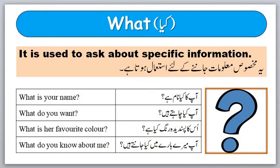Our next word is 'what,' जिसके मीनिंग है क्या. It is used to ask about specific information. मखसूस मालूमात के बारे में पूछने के लिए हम question के शुरू में word 'what' इस्तेमाल करते हैं. For example: What is your name? आपका क्या नाम है? What do you want? आप क्या चाहते हैं? What is her favorite color? उसका पसंदीदा रंग क्या है? What do you know about me? आप मेरे बारे में क्या जानते हैं?